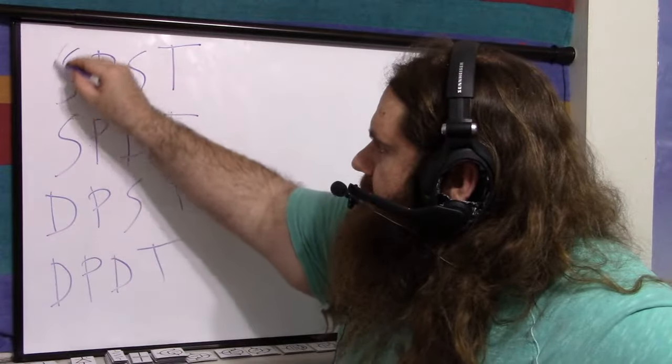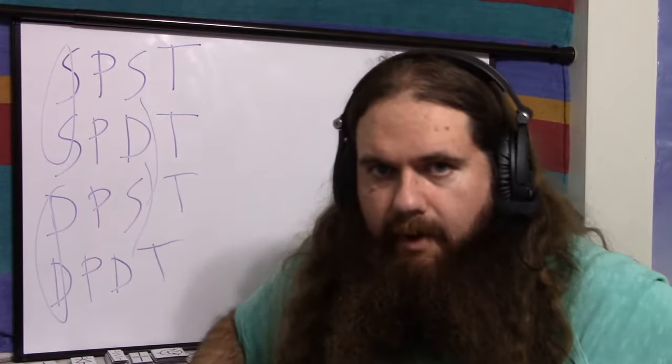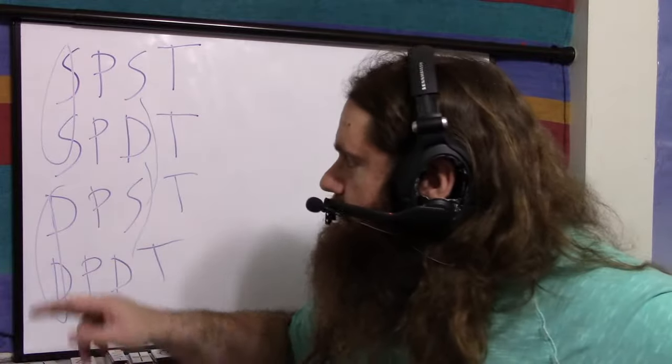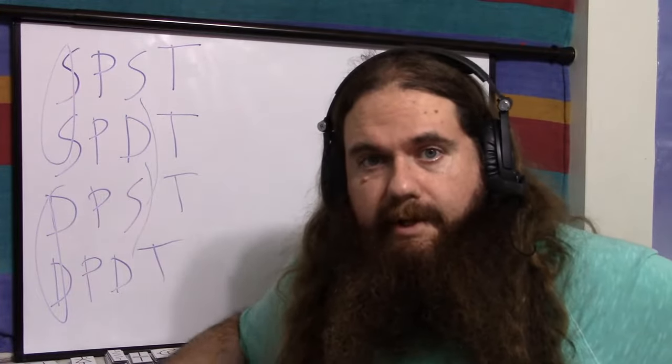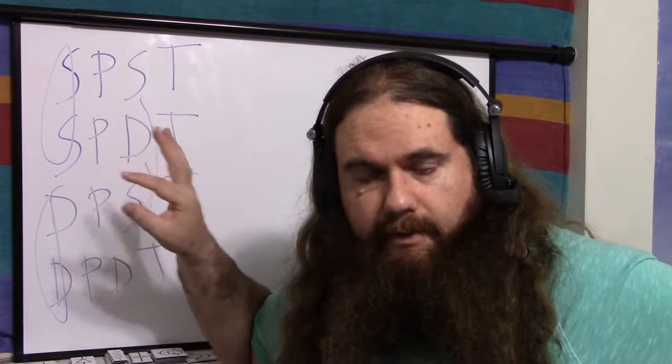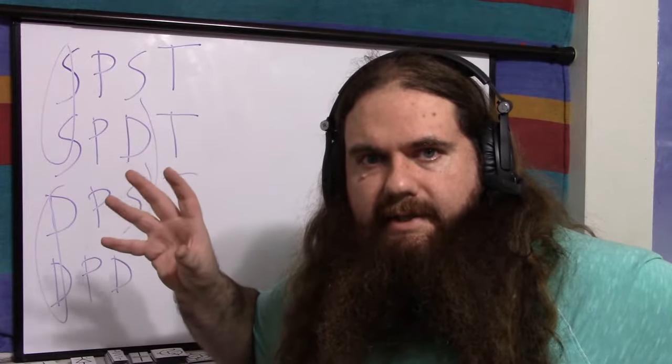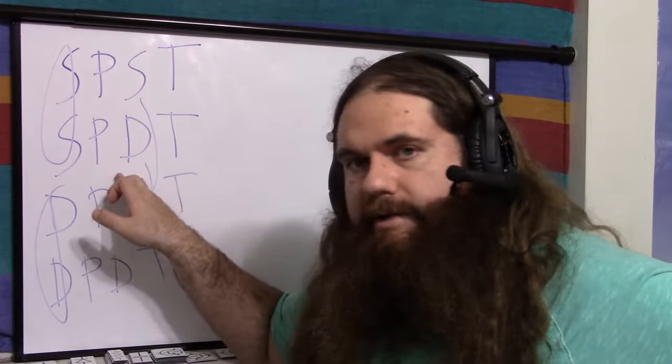You should notice a theme here. That should be fairly obvious. The P stands for pole, the T stands for throw. S is single, D is double. You can have more than single and double poles and throws. At that point, it gets silly, look at your spec sheet. But these are easy to understand.